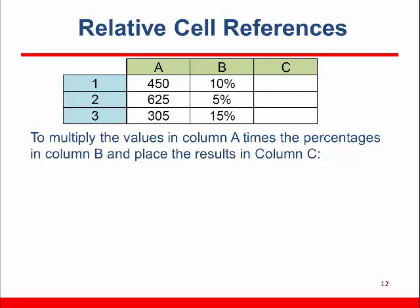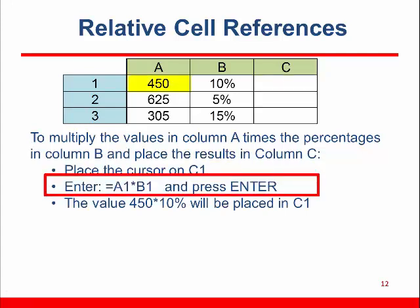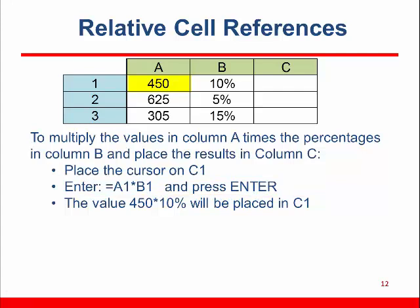We've already looked at multiplying two values. In this example, we want to multiply the values in column A times the percentage in column B and place the results in column C. Start with the cursor in C1, enter equals, point to A1, asterisk, point to B1, and press Enter. 45 will display in C1.